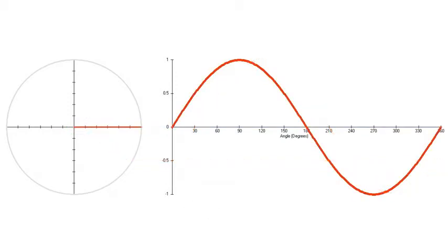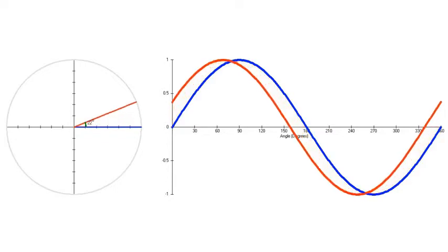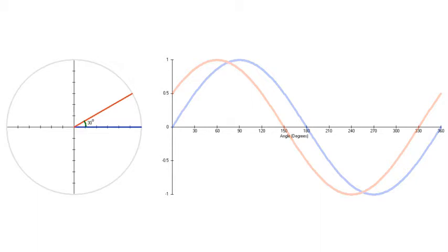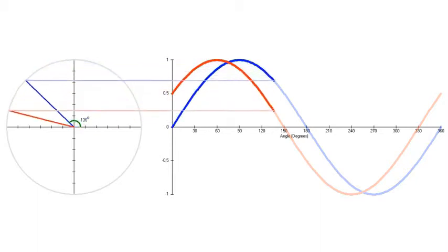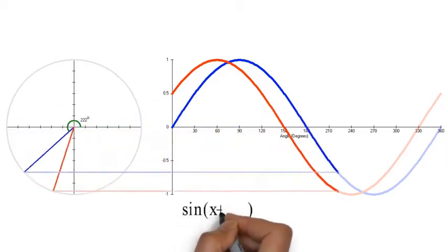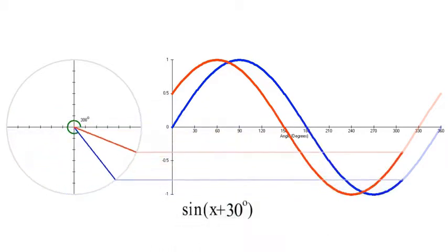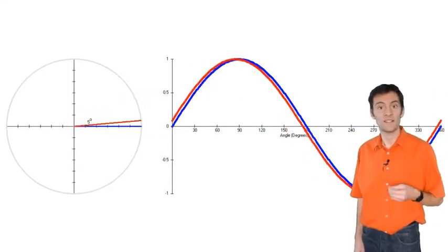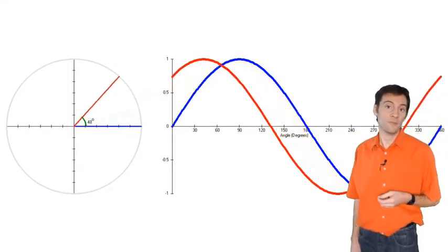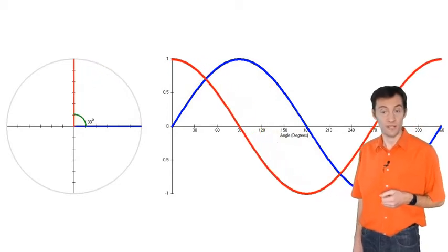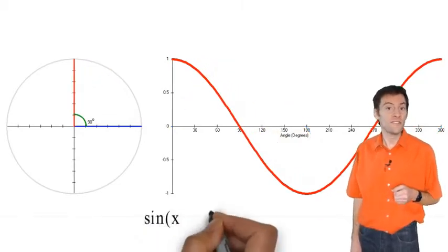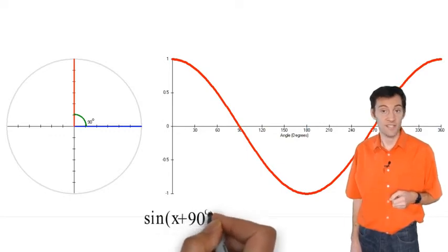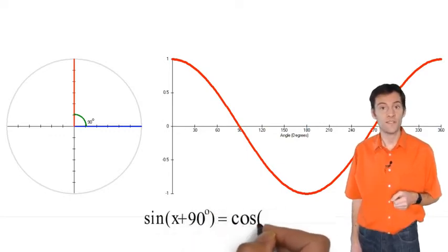What if we shift the red wave the other way, so that the red wave now leads the blue by 30 degrees? Not surprisingly, the red wave's equation now becomes sine(x + 30°). Now it just so happens that if we shift a sine wave by 90 degrees, we get a wave that can be described by another trigonometric function — the cosine function. So sine(x + 90°) is equal to cosine(x).